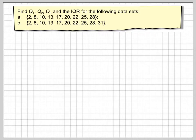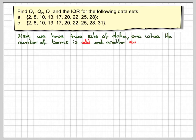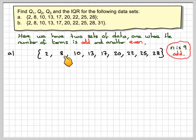So let's take the first set of data. The first set of data is 2, 8, 10, 13, 17, 20, 22, 25, 28. There are nine terms: one, two, three, four, five, six, seven, eight, nine.